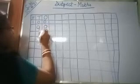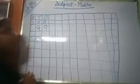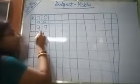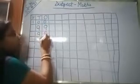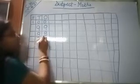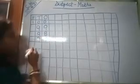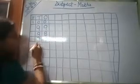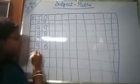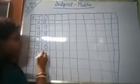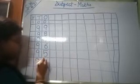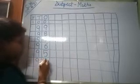99. Then 9, 8 — 98. Then 9, 7 — 97. Then 9, 6 — 96. Then 9, 5 — 95. Then 9, 4 — 94. As we are going backward.